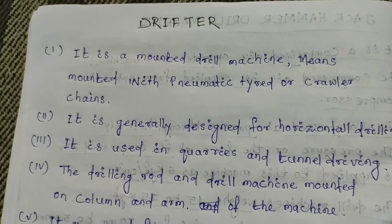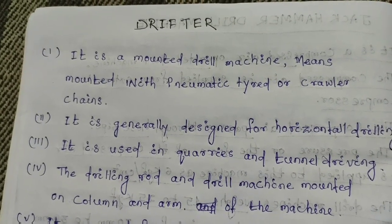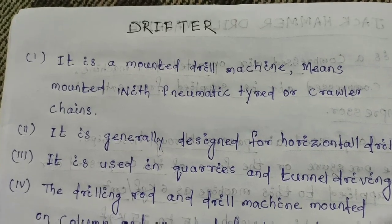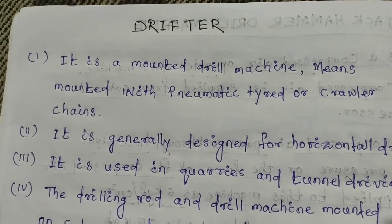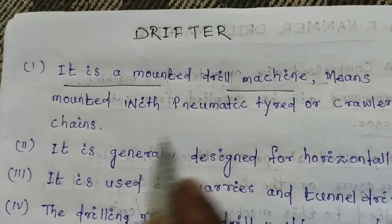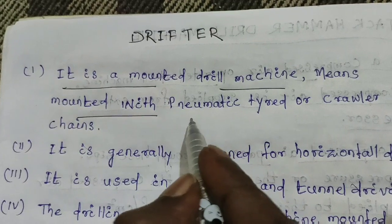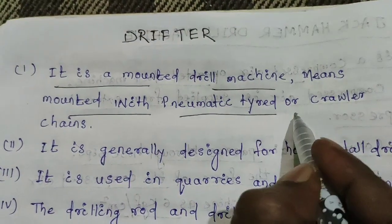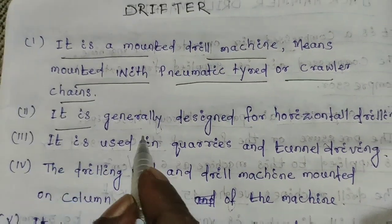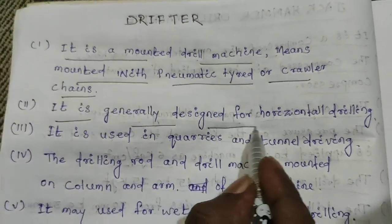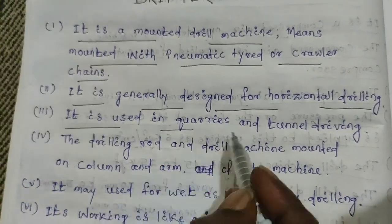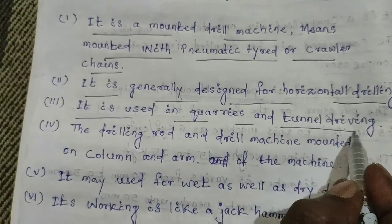Let's first discuss the drifter. A drifter is a mounted drill machine which is mounted with pneumatic tires or crawler chains. It is generally designed for horizontal drilling and is used in quarries and tunnel driving.